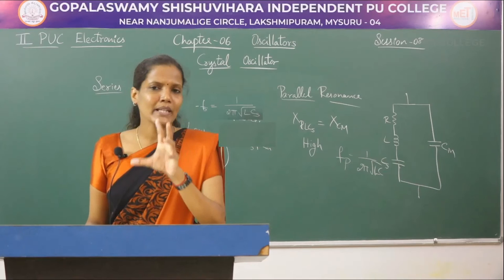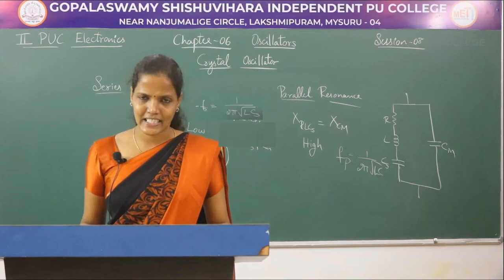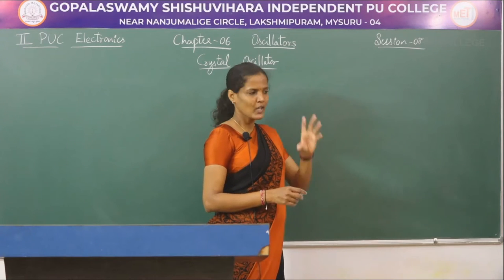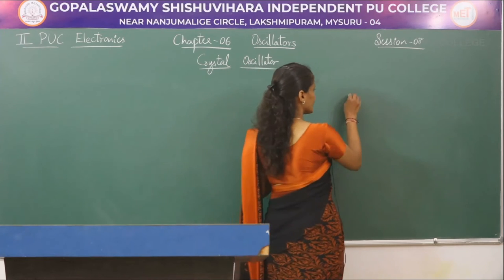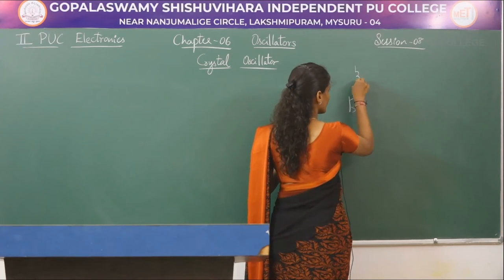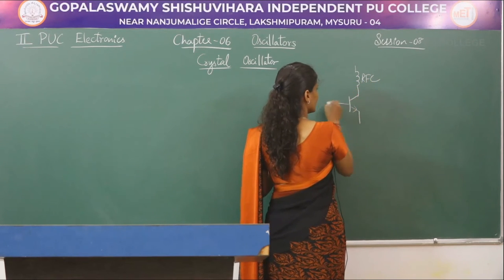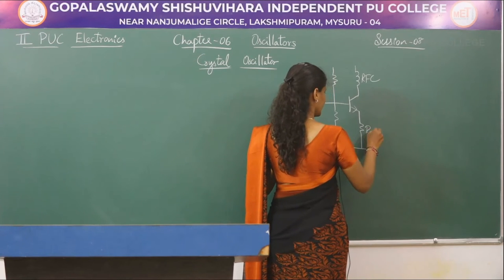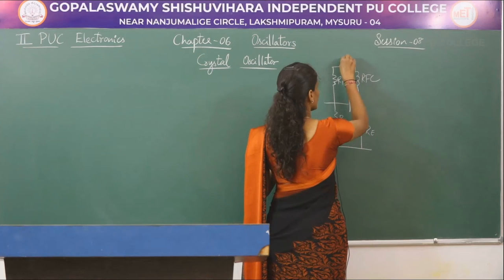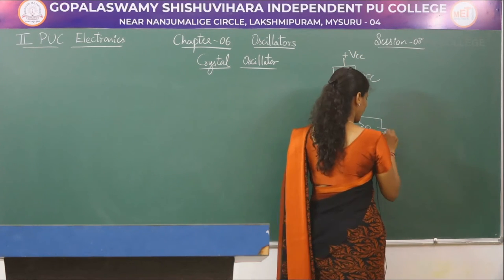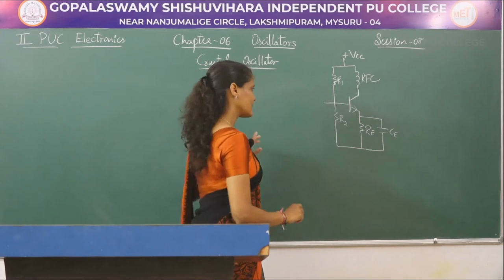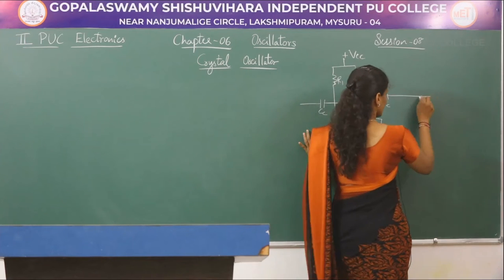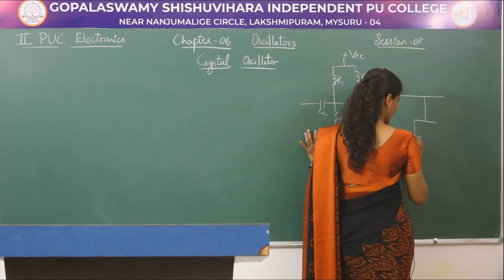Now let us see how the crystal is implemented in an oscillator circuit to generate oscillating signals. The oscillator circuit needs two separate blocks: the amplifier block and the feedback block. For the amplifier, we use a transistor in NPN configuration. The circuit includes an RFC, voltage divider resistors R1 and R2, RE, a bypass capacitor CE in parallel with RE, and coupling capacitors CC. The feedback path is present in the feedback block.